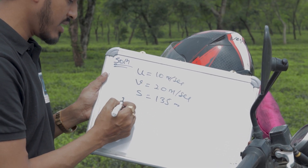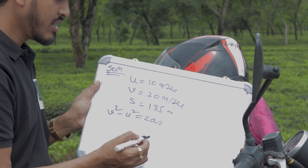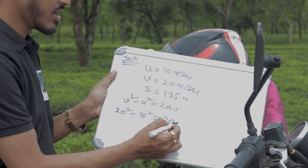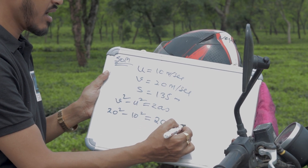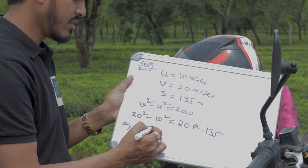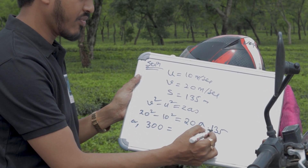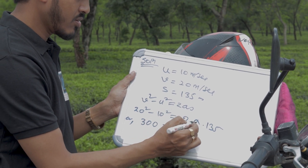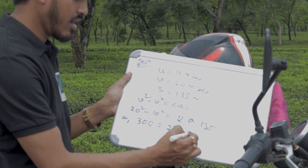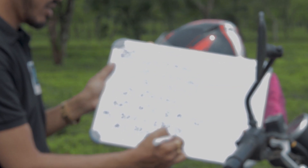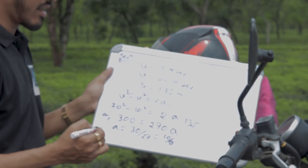Using the equation v² minus u² equals 2AS: 20² minus 10² equals 2 times A times 135. That gives 400 minus 100 equals 270A, so 300 equals 270A. Cancelling the zeros, A equals 30 divided by 27, which means A equals 10 by 9. So the value of acceleration A is 10/9 meters per second squared.